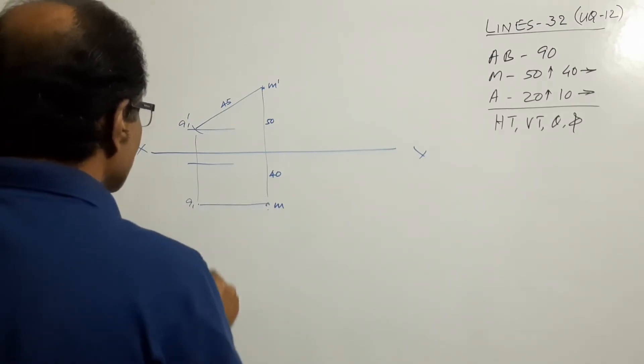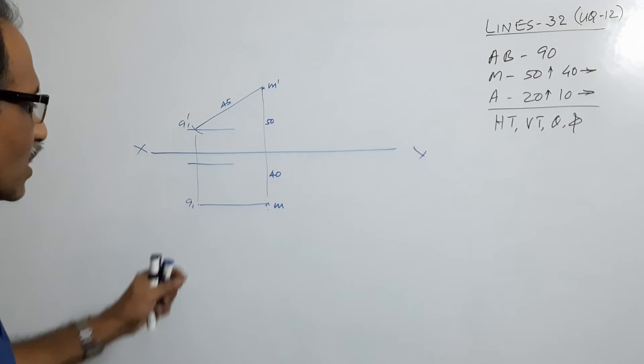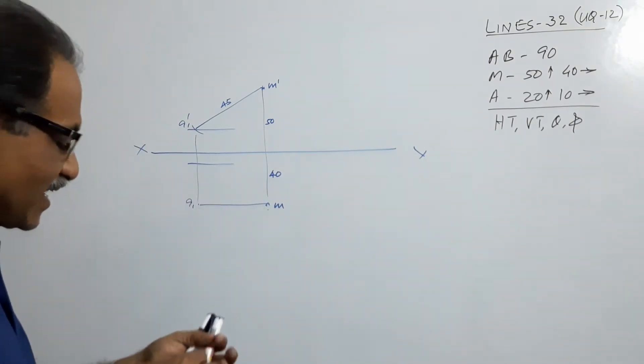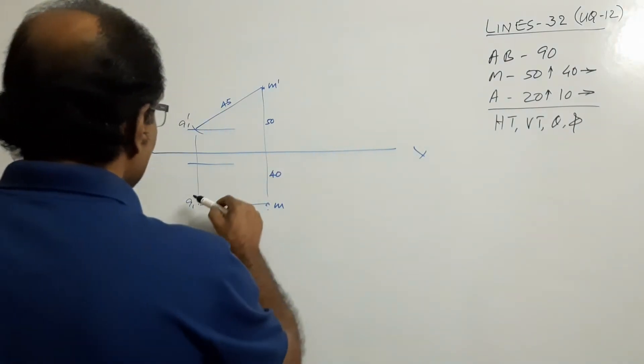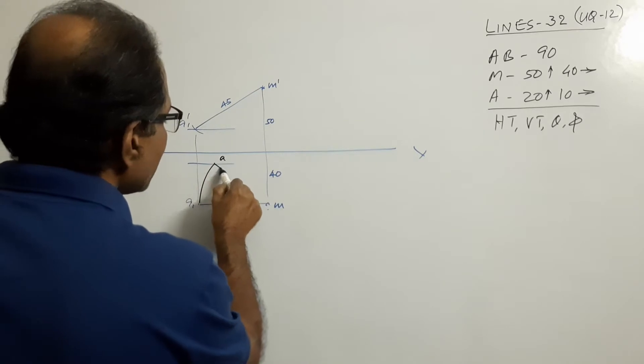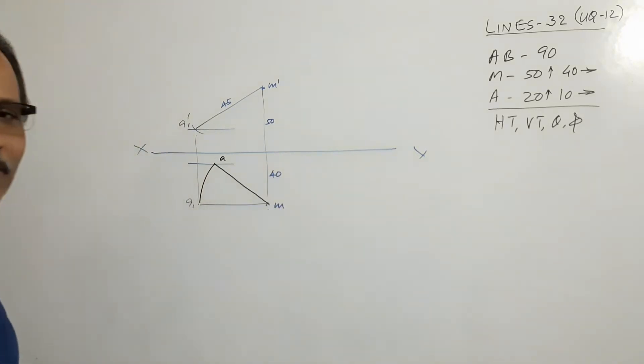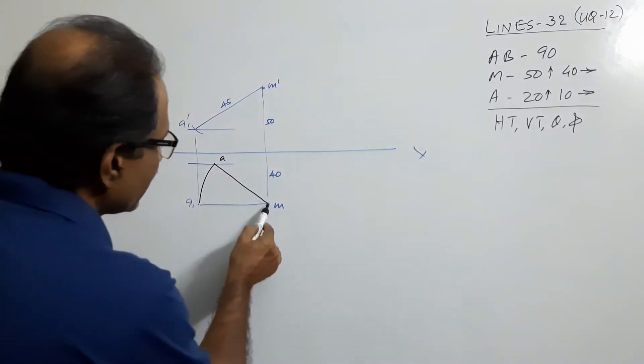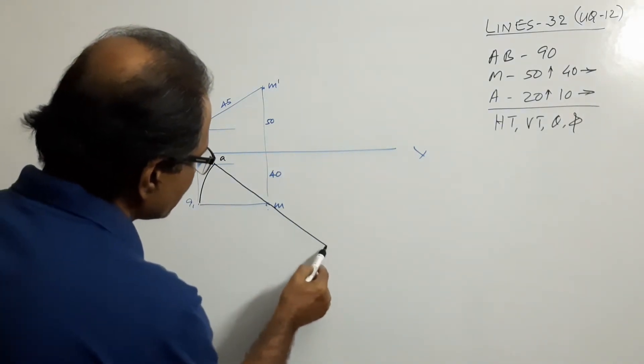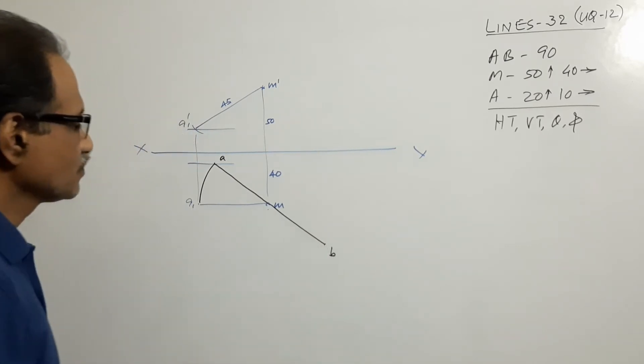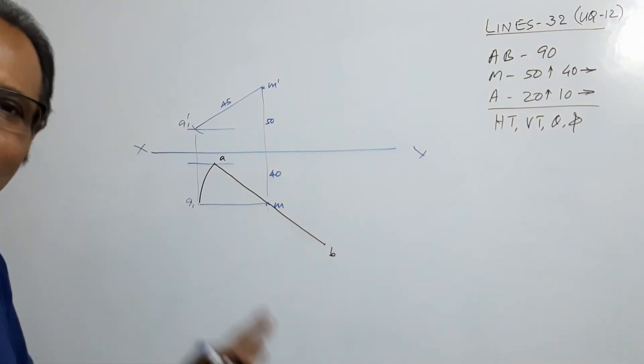This is A1. If this is A1, you know small A is here, so where is A? M A center, M A1 as radius, cut an arc A so that A M is half the plan. If A M is half the plan, where is full plan? Extend it in the same direction, means opposite direction, same length in the opposite direction. B, AB is the final plan.